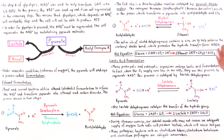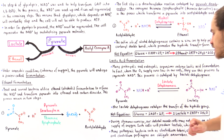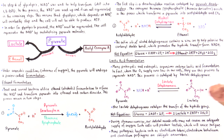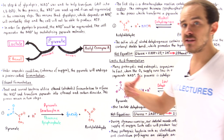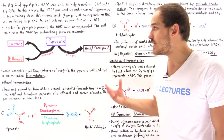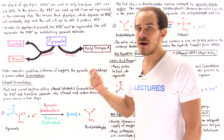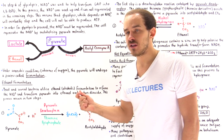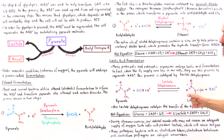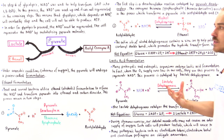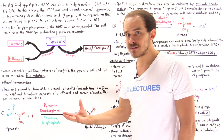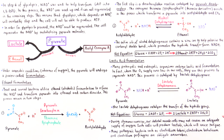During strenuous exercise, skeletal muscle cells may not receive an adequate supply of oxygen, so they begin to undergo lactic acid fermentation to generate ATP molecules quickly and effectively. This results in a buildup of lactate — lactic acid — which causes fatigue.